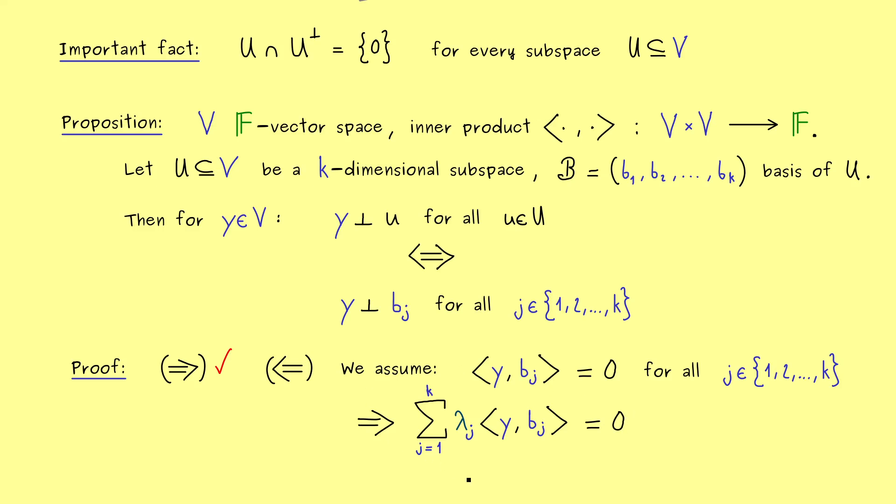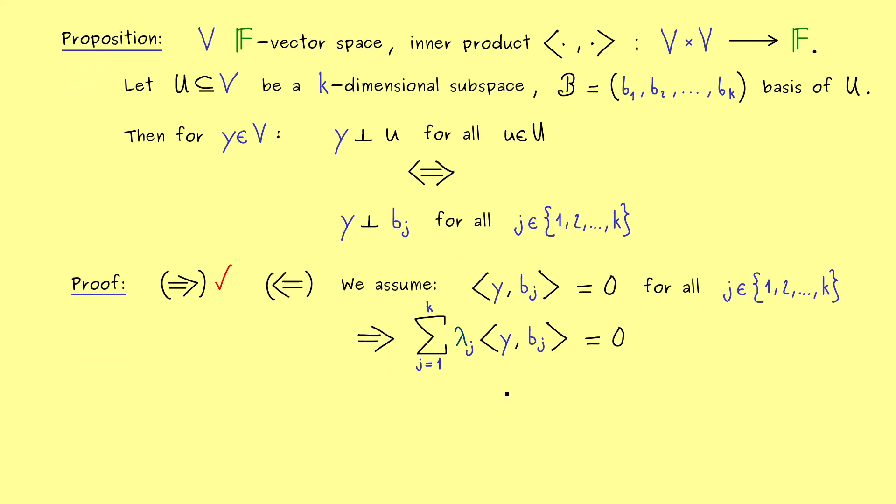And now at this point the linearity in the second argument for the inner product can come in. This means we just pull in the scalars and the sum. And there we get that every linear combination with the basis vectors combined with y in the inner product gives us 0. And since we have a basis here, we know that every u in u has such a linear combination representation. Therefore we have exactly shown what we wanted.